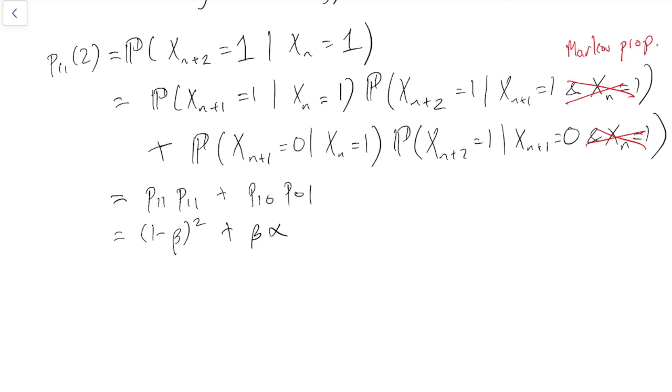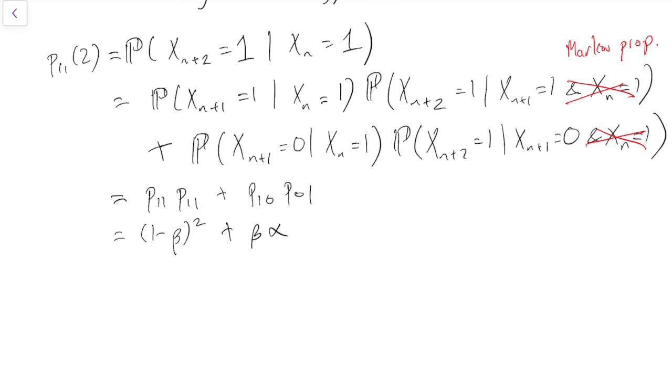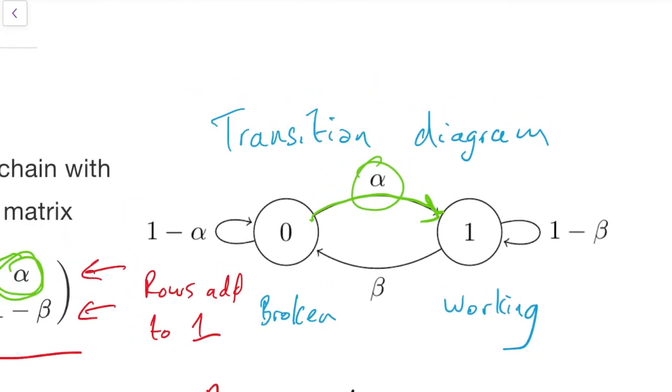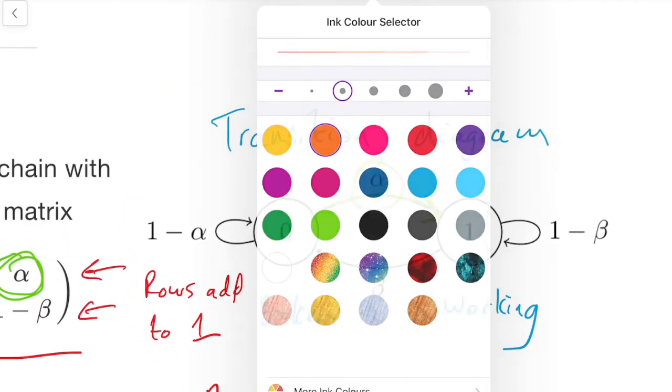There's another way of thinking of what we did here, which is we're looking for getting from 1 to 1 in two steps. So if we come back to our diagram up here and ask, what's the probability of going from 1 to 1 in two steps? Well, there's two ways we could have done that. You could start at 1, stick at 1, then stick at 1. So that would be two moves from 1 to 1, and so that would be (1 minus beta) squared.